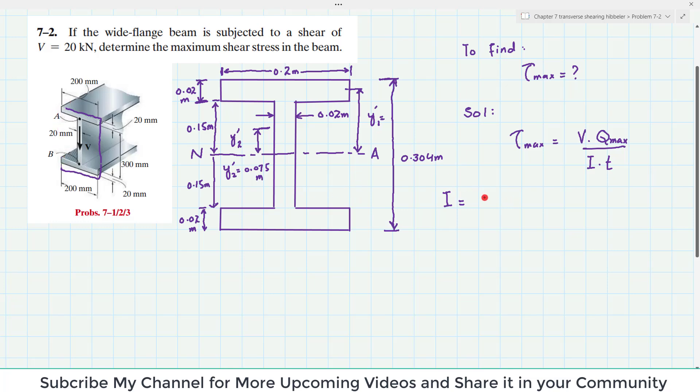So you will find that this is equal to 1 over 12. Breadth is 200 mm which is 0.2. So 0.2 into height is, total height is 320 and 20, 340 which is equal to 0.340 whole power 3.